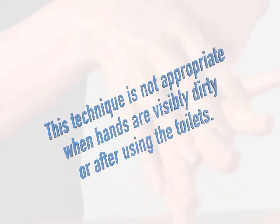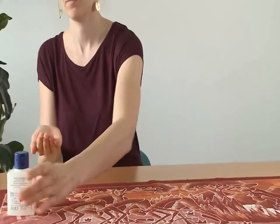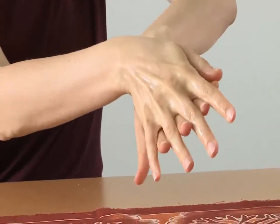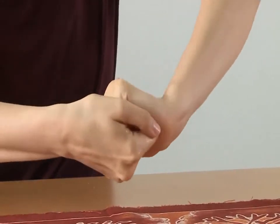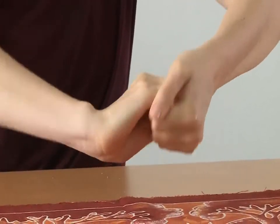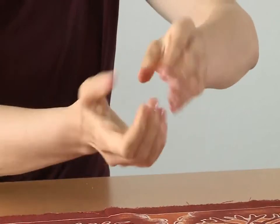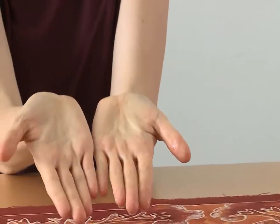Hand rubbing should take 20 to 30 seconds. Apply a palmful of alcohol-based hand rub in a cupped hand, enough to cover all surfaces. Rub hands palm to palm, then right palm over the back of left hand with interlaced fingers and vice versa. Rub again palm to palm with fingers interlaced. Rub the back of your fingers to opposing palms with fingers interlocked. Rub rotationally left thumb clasped in right palm and vice versa. Rub rotationally backwards and forwards with clasped fingers of right hand in left palm and vice versa. Once dry, your hands are now clean and safe.